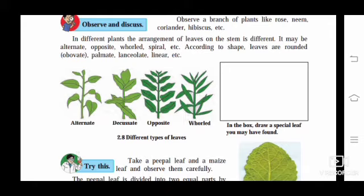In different plants, the arrangement of leaves on the stem is different. It may be alternate, as shown in the first figure of 2.8. The third figure shows opposite arrangement of leaves on the stalk. There's also whorled, spiral, etc. According to shape, leaves are rounded, palmate, lanceolate, linear, etc.